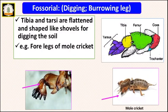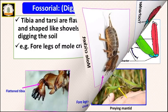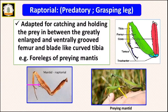The next type is fossorial or digging or burrowing legs. In this kind, the tibia and the tarsus are flattened and shaped like shovels for digging the soil. For example, in mole crickets, the forelegs are modified as digging or burrowing legs.